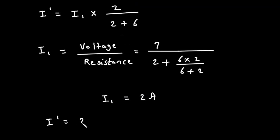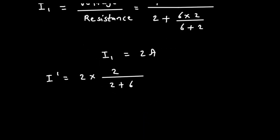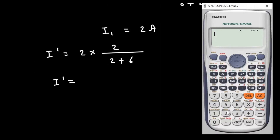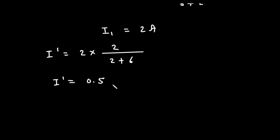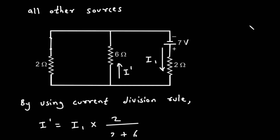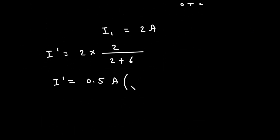Now substituting I1 = 2A into the current division formula: I prime = 2 × 2 divided by (2 + 6), which gives 0.5 ampere, and the direction is upward.